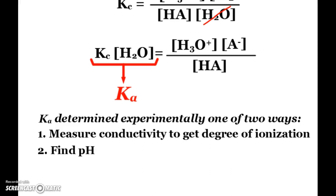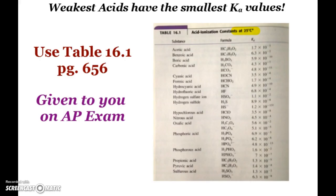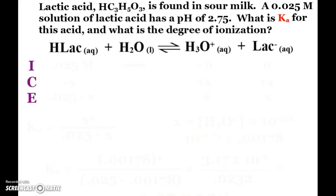And these Ka's are determined experimentally either by measuring conductivity to find out the degree of ionization of our weak acid or by finding pH. The nice thing is these Ka's are easy to find. They're in tables. They're given to you on the AP exam. But it is possible to actually calculate a Ka.